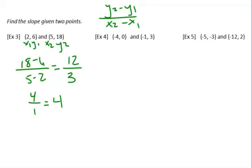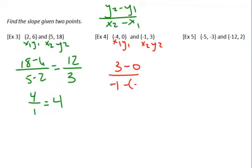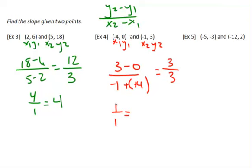Let's try this one. Label x1, y1, x2, y2. So it's y2 minus y1 over x2 minus x1: 3 minus 0 over negative 1 minus negative 4. Three minus 0 is just 3. Negative 1 minus negative 4 — that's one bad guy, four good guys — we're left with three good guys, so that's positive 3. Three divided by 3 reduces to 1 over 1, or just 1.